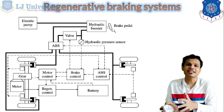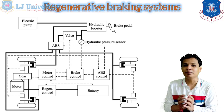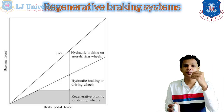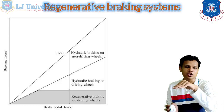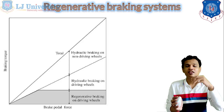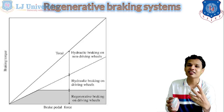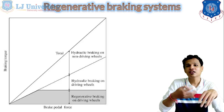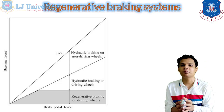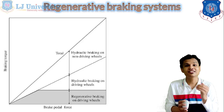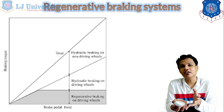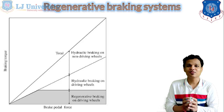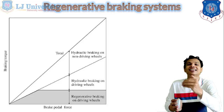When the vehicle is in the stop condition, the kinetic energy will be zero, so after that regeneration is not possible. The graph shows the pedal force and braking torque relation — the grey area at the bottom represents regenerative braking on the driving wheels, above that is hydraulic braking on the driving wheels, and above that is hydraulic braking on the non-driving wheels. The brake force is distributed with the help of sensors — the electronic brake force distribution system, which we also use in IC engines. Almost all electric vehicles use regenerative braking.